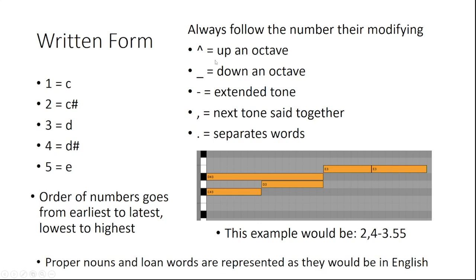These little ditties here help with some extra stuff. Like, this up arrow—up an octave; underscore—down octave. The dash extends a tone, which means it covers twice as much ground, you say it for twice as long. Commas mean that the following tone is pronounced at the exact same time as the prior one, and periods separate words. The order of the numbers when written are from earliest to latest, lowest to highest.